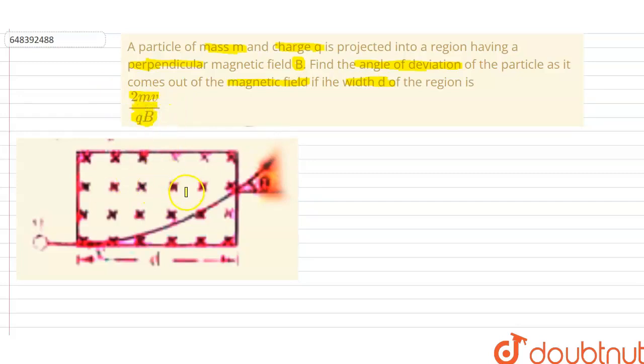I have given the diagram. The magnetic field and the width is D. Now we want to find out the angle of deviation, theta.